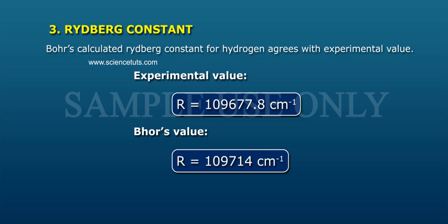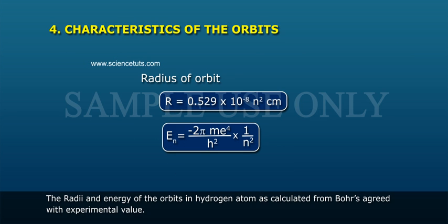4. Characteristics of the orbits. The radii and energies of the orbits in hydrogen atom as calculated from Bohr agreed with experimental value.